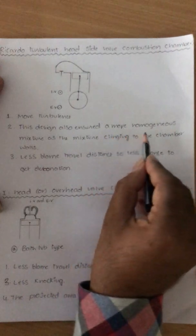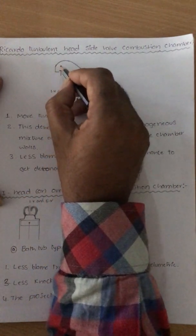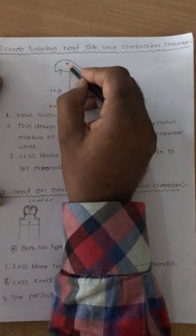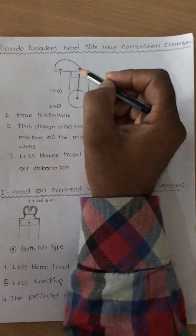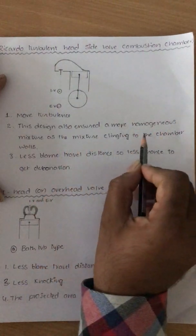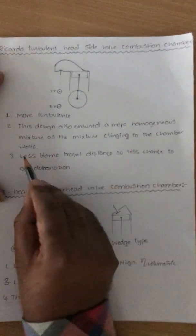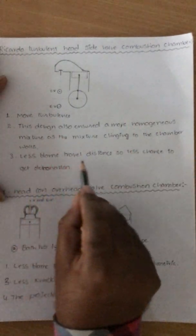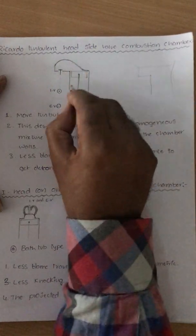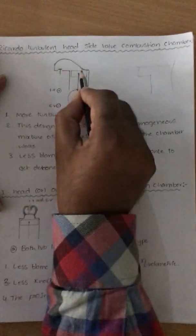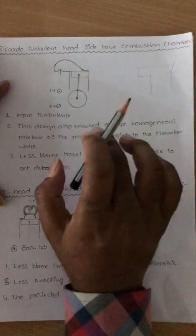This design also ensures a more homogeneous mixture as the mixture clings to the chamber walls — it attaches to the walls and moves away repeatedly, promoting mixing. So automatically it ensures a more homogeneous mixture. It also provides less flame travel distance and therefore less chance of detonation. When compared to the side wall combustion chamber, turbulence increases and flame travel distance reduces, so detonation is reduced. This makes it somewhat more useful than the earlier designs.